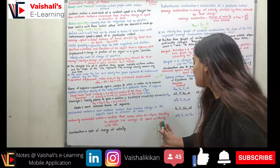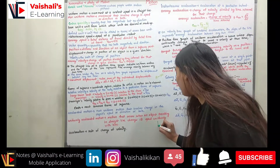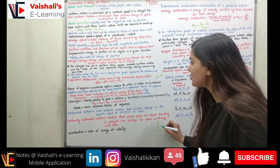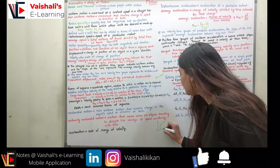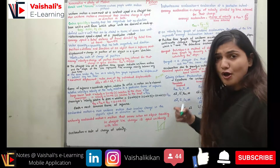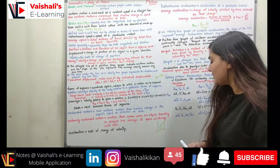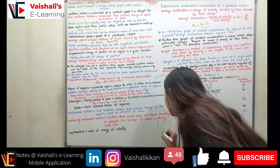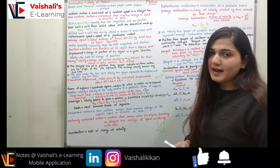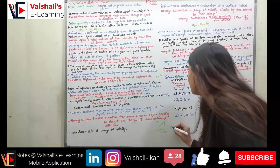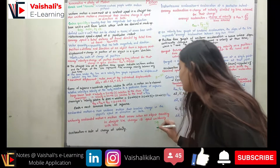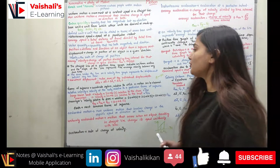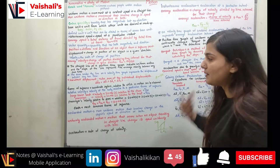On a position-time graph representing uniform motion, the slope of the line between times T1 and T2 gives the average velocity over that interval. This is a displacement-time graph used to find velocity. If it were a distance-time graph, the slope would give average speed. The area under the line on a velocity-time graph represents the displacement between any two times.